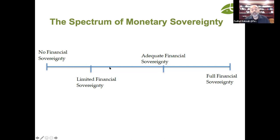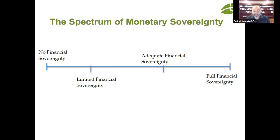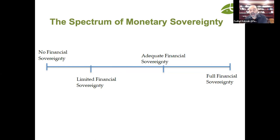What determines where you stand on that spectrum of monetary sovereignty is the level of external debt you have. Countries with the highest degree of monetary sovereignty, like the US and Japan, have no external debt — all their debt is denominated in the national currency. Countries with zero monetary sovereignty have all their government debt as external debt because they have no national currency. The more external debt you have, the weaker your monetary sovereignty and the more desperate your country is to fix its exchange rate to the dollar or euro to defend against the inflation pass-through effect on food, fuel, and medical imports.